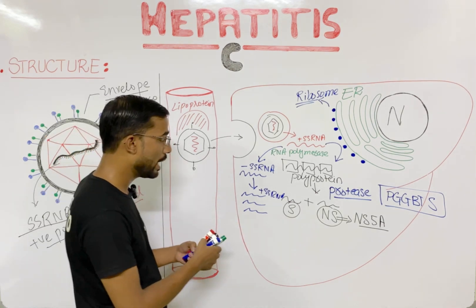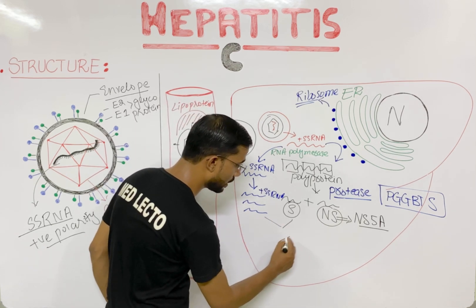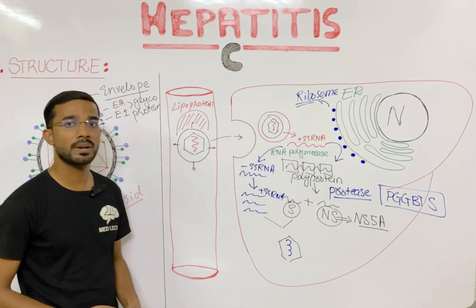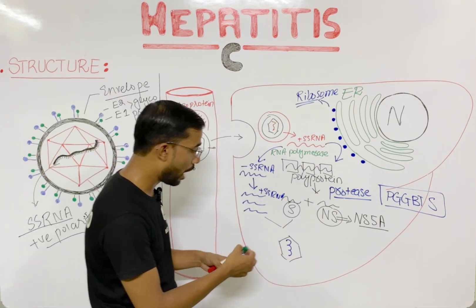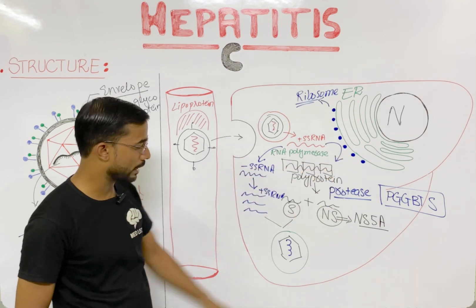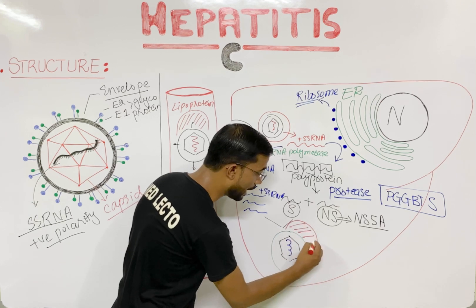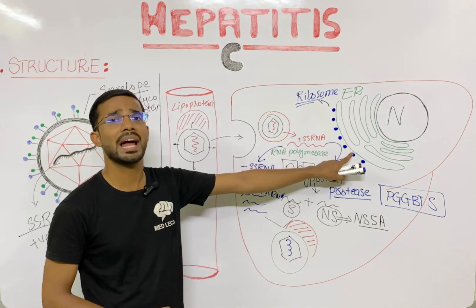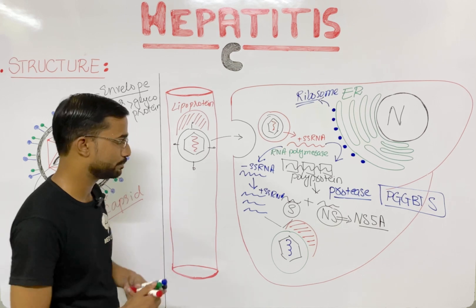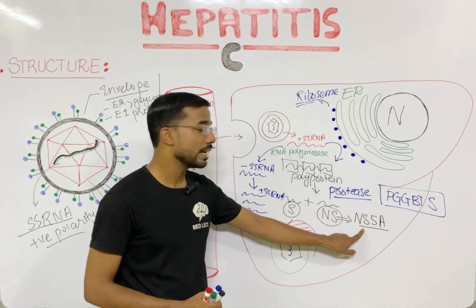Now you have two important components: the protein component and the genome component. The capsid assembles around the positive polarity RNA, and the envelope is added outside. This entire assembly process occurs in the endoplasmic reticulum. Lipoprotein attachment also happens in the endoplasmic reticulum, forming the complete lipo-viral particle.